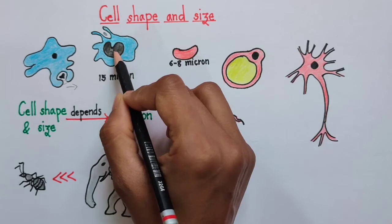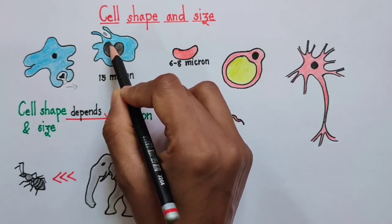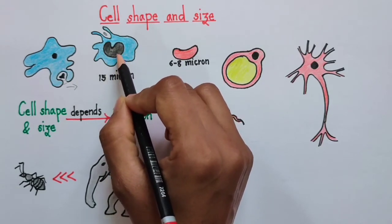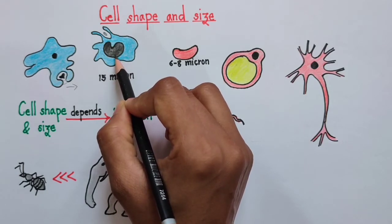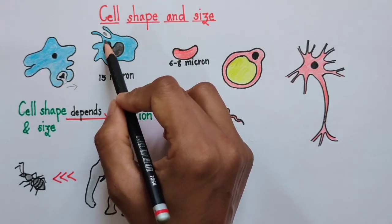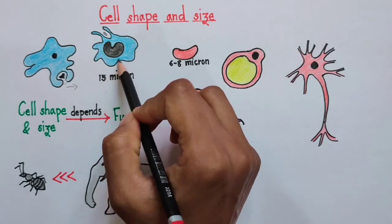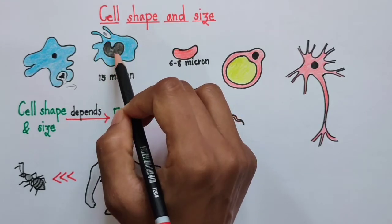So as you can see, this cell has a nucleus which is bean shaped. So this is my monocyte. Monocyte is again a type of WBC. However, on the whole, this cell doesn't have any particular shape. Now why?